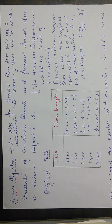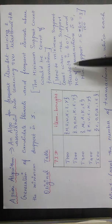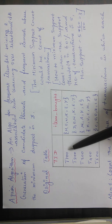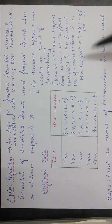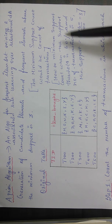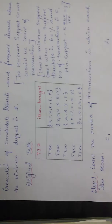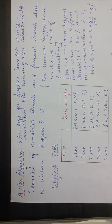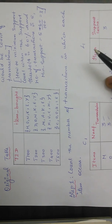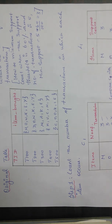Now here comes a very important concept called minimum support. Minimum support count is a count of transactions — it would be 60% of the total number of transactions. This 60% minimum threshold is set by the user. So if the support threshold is given as 60%, you calculate minimum support as: number of transactions (5) multiplied by support threshold (60/100) equals 3.